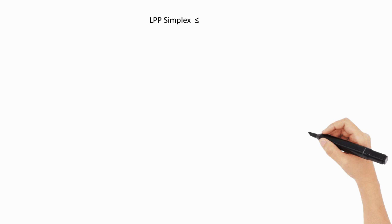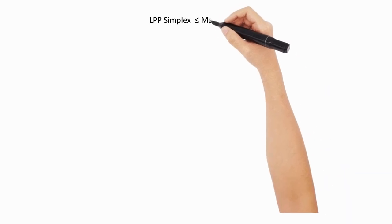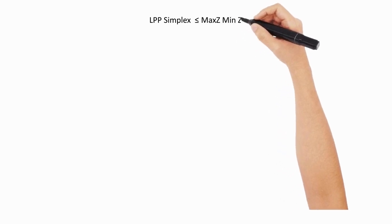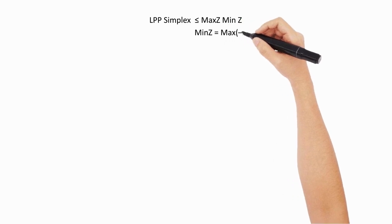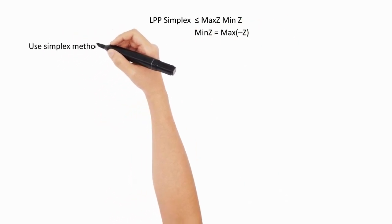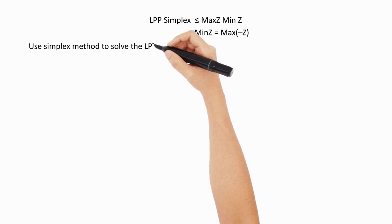Whenever the question is given, we are supposed to first check according to the algorithm whether it is a max Z question or a min Z question. If by chance the question is given as min Z, then obviously we convert the question into the general form that is commonly used.